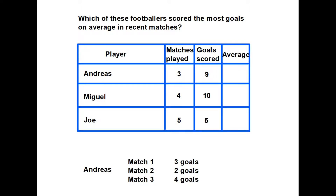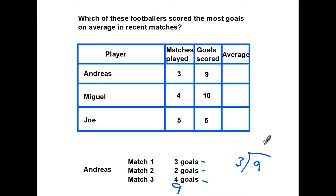Looking more closely at Andreas's figures: in match one he scored three goals, in match two two goals, and in match three four goals. Adding those up, three plus two plus four is nine total goals. We then divide by the number of matches — one, two, three — so nine divided by three gives an average of three goals per match. Looking back at the top table, the total goals and number of matches are already given to us.